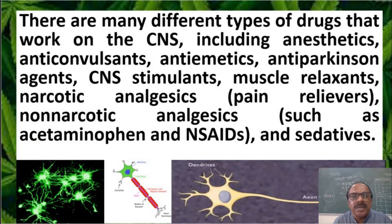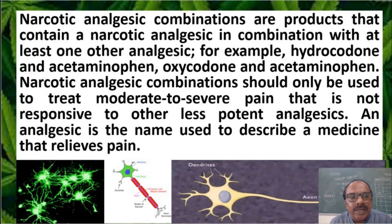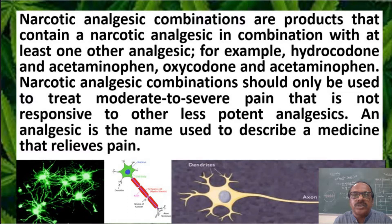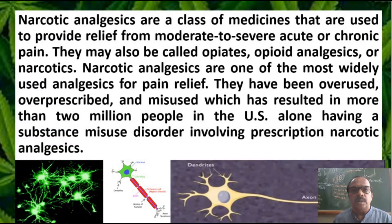There are many different types of drugs that affect the central nervous system, and most of them are synthetic. They are used as medical substances by practitioners. This class focuses on narcotic substances produced from narcotic plants. Narcotic analgesics are a class of drugs containing narcotic analgesics in combination with at least one other analgesic like hydrocodone. They are used to provide relief from moderate to severe, acute, or chronic pain, and may also be called opiates, opioid analgesics, or narcotics.